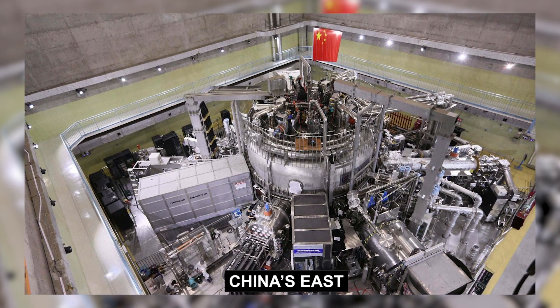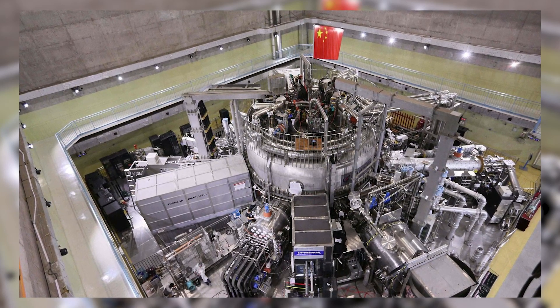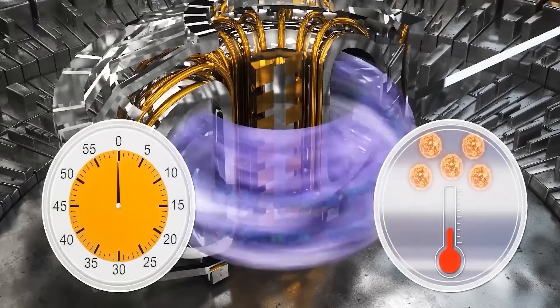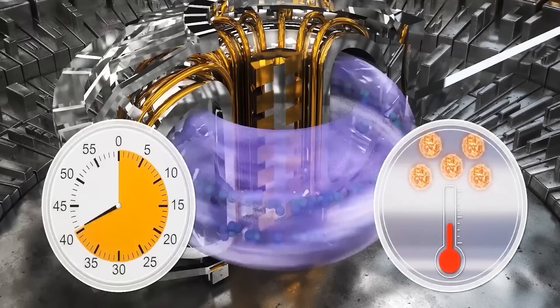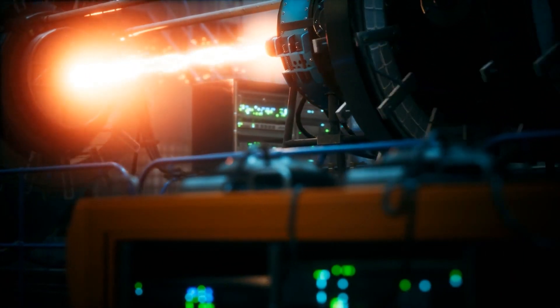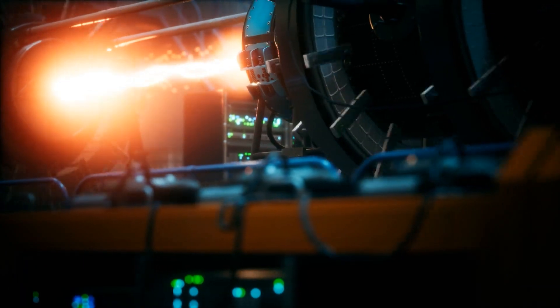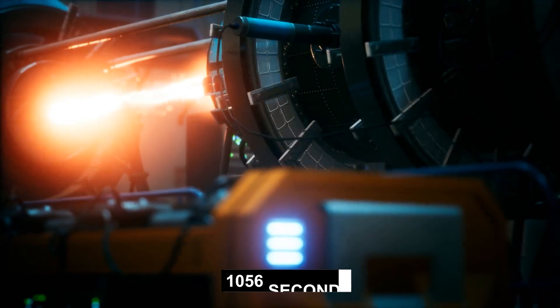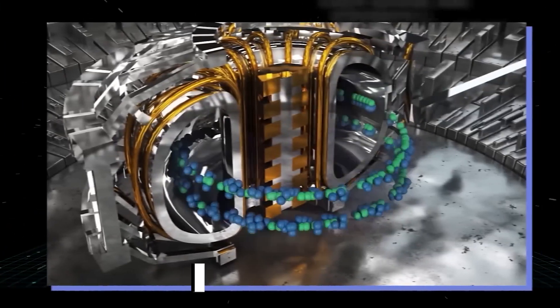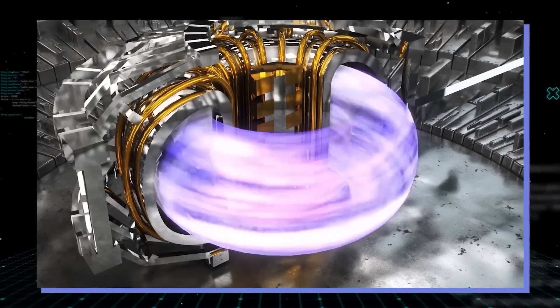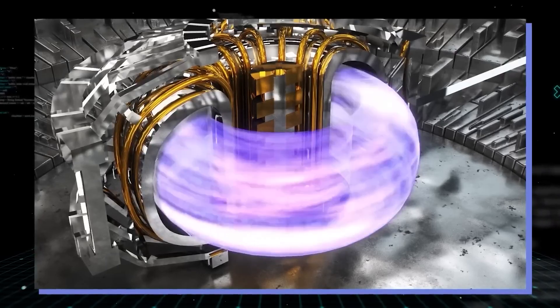China's EAST, also known as the Experimental Advanced Superconducting Tokamak, accomplished an impressive feat by effectively raising the temperature of a plasma loop to an extraordinary level surpassing the Sun's intensity by five-fold. This remarkable achievement persisted for a duration of over 15 minutes, during which the reactor maintained an astounding temperature of 158 million degrees Fahrenheit for a total of 1,056 seconds. The scientific community widely commended this milestone, as it signifies a substantial advancement towards the realization of a nearly limitless and environmentally friendly energy source.